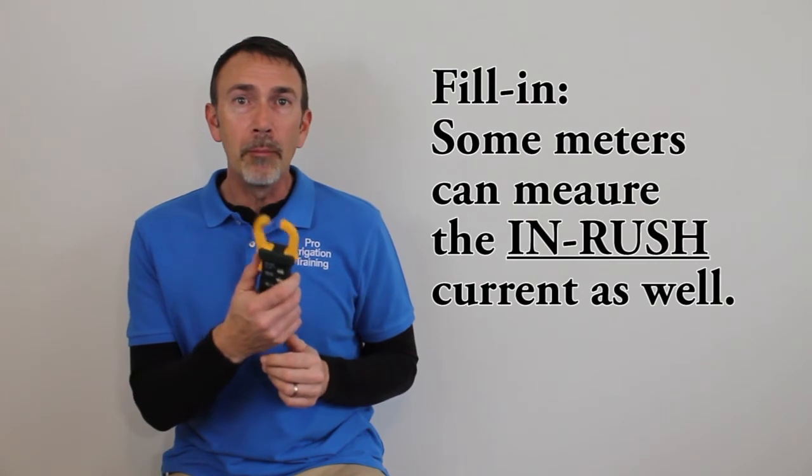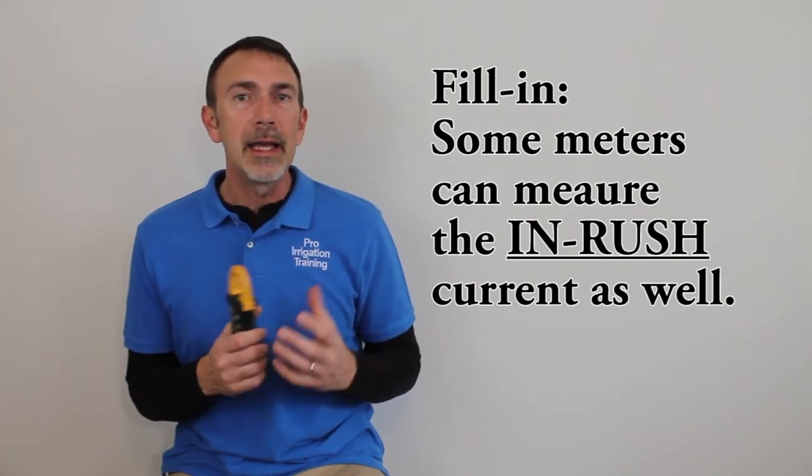Now with our clamp multimeter, we need to remember to only put this clamp around one of those wires, and that would give us our true amperage reading, but if we put it around both the black and the white, it's going to be measuring the amperage coming and going, so it'll zero itself out.